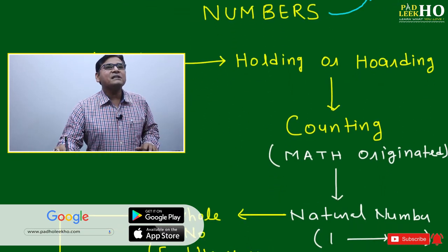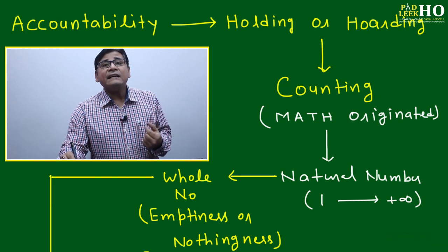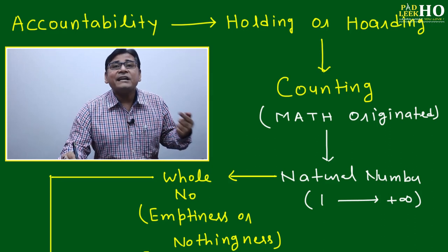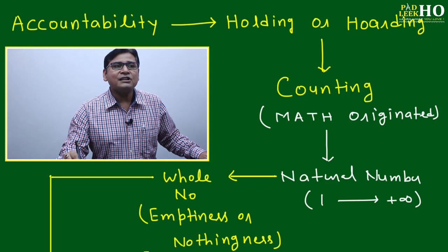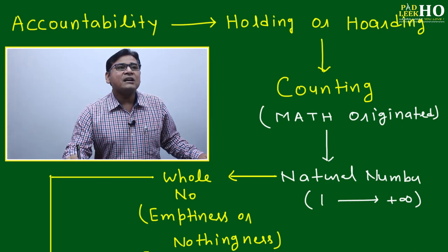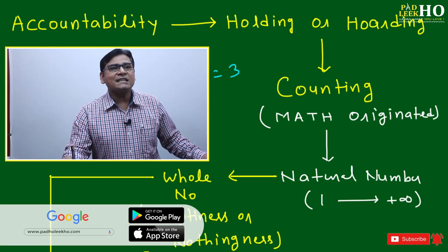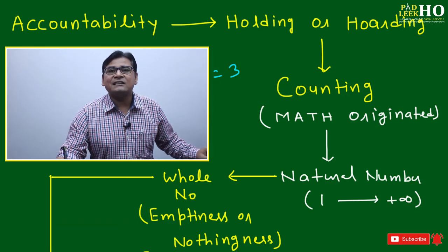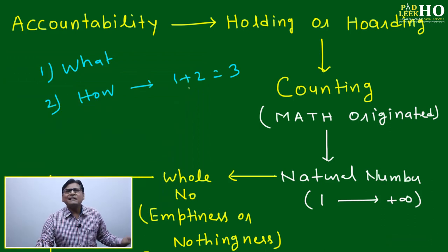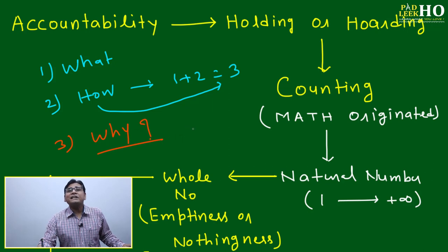Let's look at how numbers originated. Our education system — especially the Indian education system — generally does not encourage children to inquire at a third level. The first level of inquiry is: what is there? Like numbers one, two, three, four. The second level is: how is it happening? We say one plus two equals three. But no student asks, and no teacher explains, why one plus two equals three — they just say it is the rule of addition.